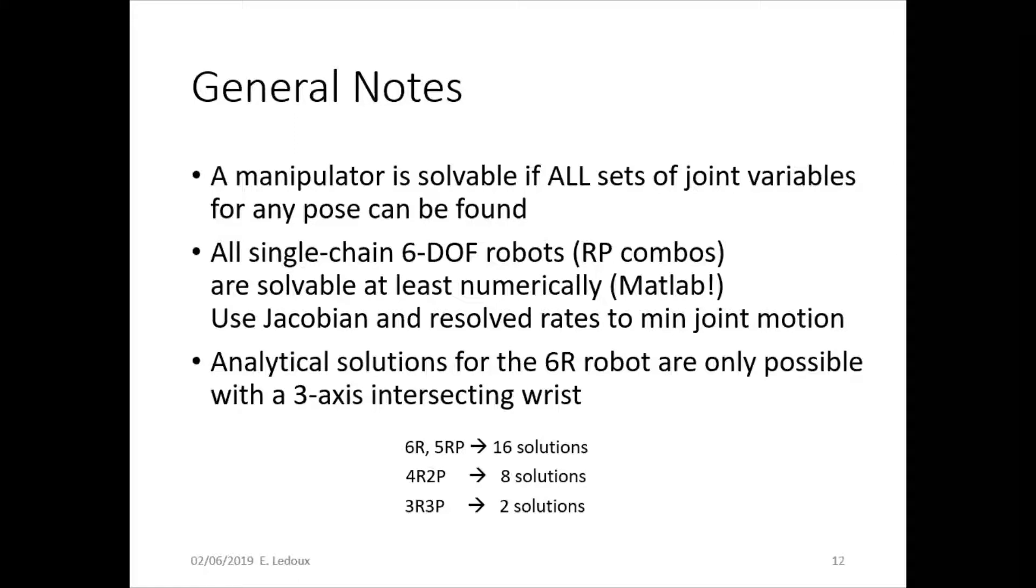A manipulator is solvable if all sets of joint variables for any pose can be found. So you need to be able to find the answers for every single joint for a specific pose for it to be completely solvable. All single chain 6-degree freedom robots, combinations of revolute and prismatic joints, are solvable at least numerically. So you could use MATLAB even if you couldn't solve it by hand. And in that case you would use the Jacobian and resolved rates to minimize the joint motion. More on that in a future video.